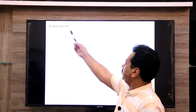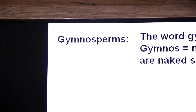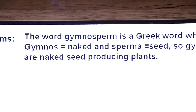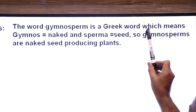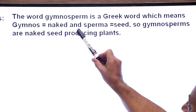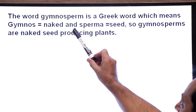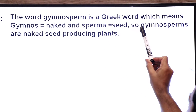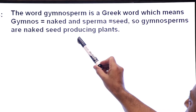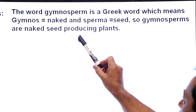Assalamu alaikum, namaste dear students. Today we are going to talk about the characteristics of gymnosperms. The word gymnosperm is a Greek word which means naked seed — 'gymnos' means naked and 'sperma' means seed. So gymnosperms are naked seed producing plants.